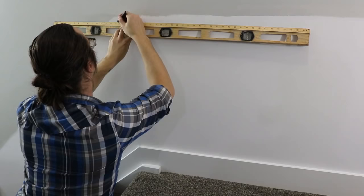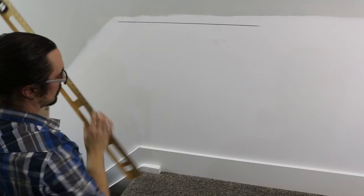The first step is to mark where the top of your chair rail is going to sit. I've done mine at 32 inches off the floor, then just simply draw a level line at that point.